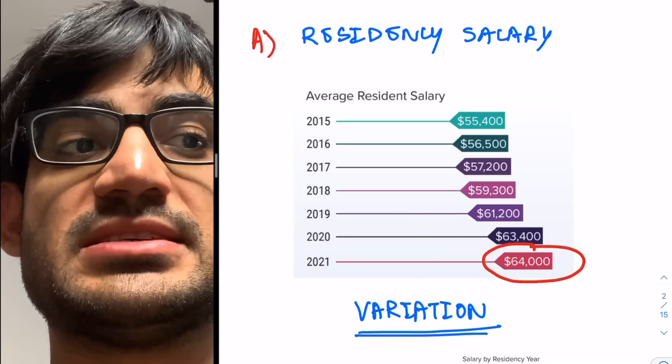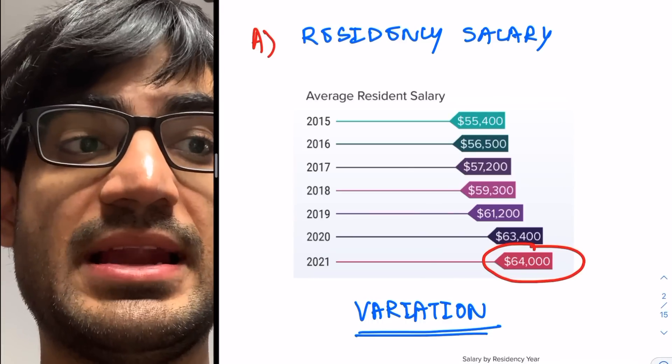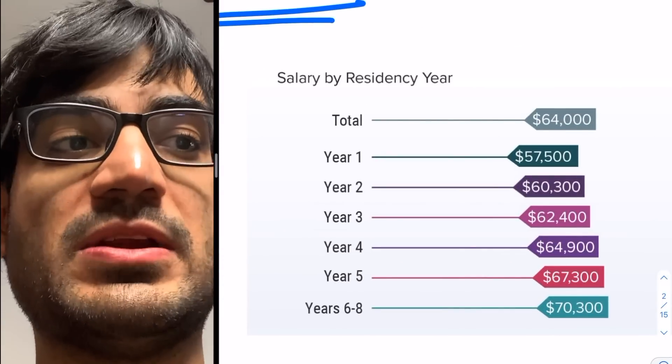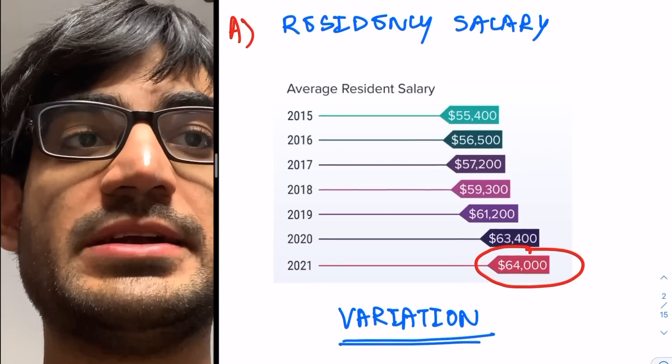When you start your residency, you'll probably make less than $64,000, like about $57,000, and then it will keep on increasing year by year.